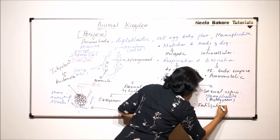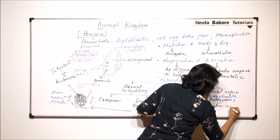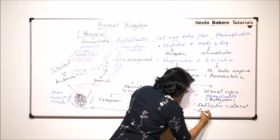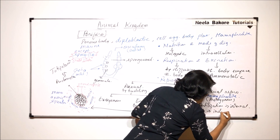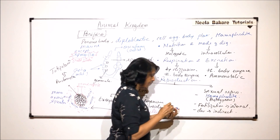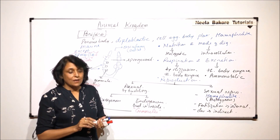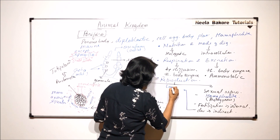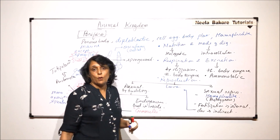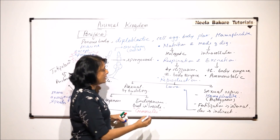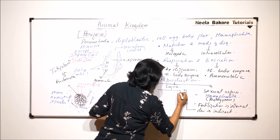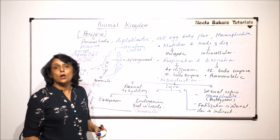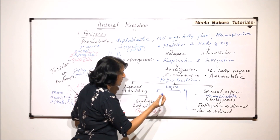Fertilization in case of sponges is internal, and the development is indirect — meaning there is a larval stage which is formed. There are two types of larvae seen: one is solid and one is hollow.